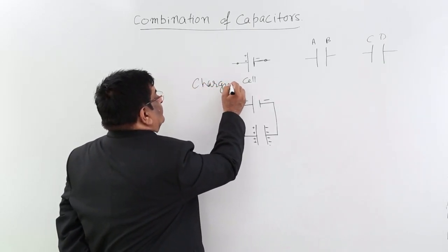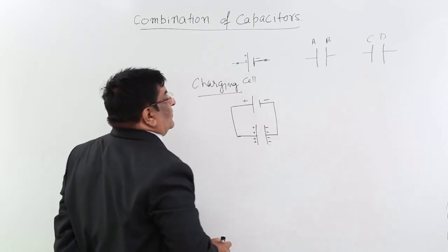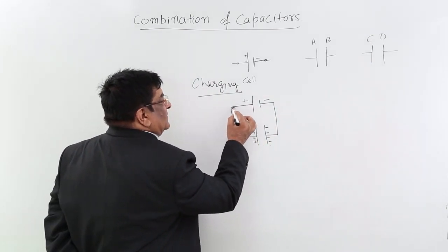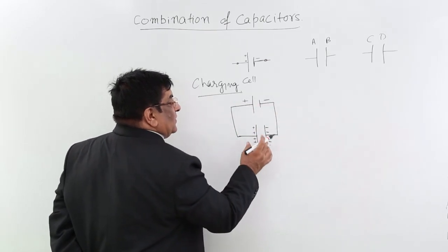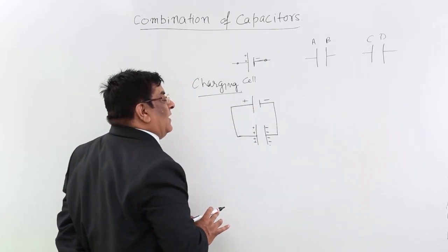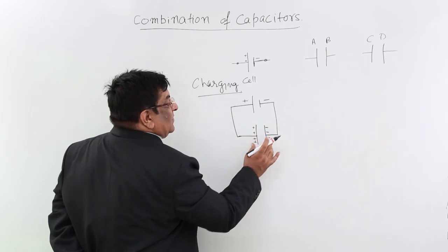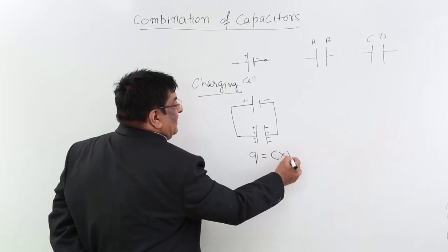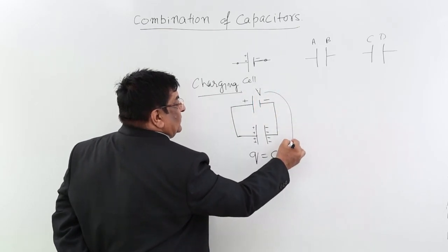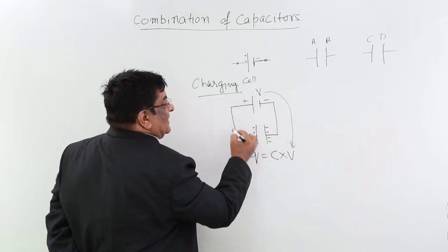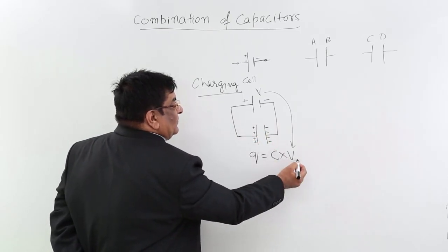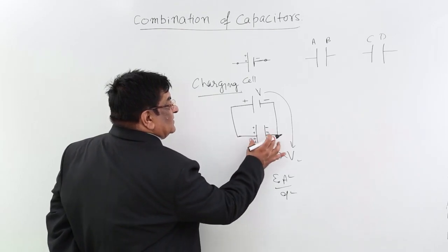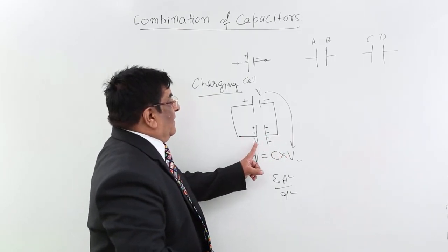Electrons are flowing from one side to the other, and at the same time electrons are flowing on the other side too, but after some time this process stops. Why? Because it has reached the maximum charge, and the maximum charge is capacitance C multiplied by V, the potential difference. The maximum potential difference developed across the capacitor is V, and C is the capacitance, which is controlled by the dimensions of the capacitor. This is how a capacitor is charged.